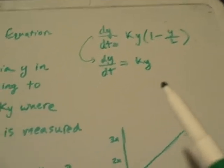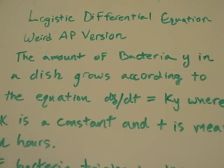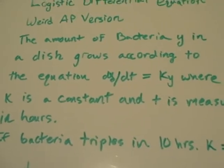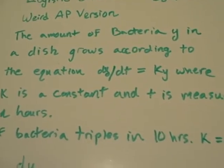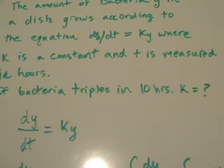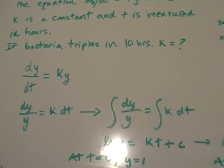So just keep that in mind if you already know stuff about logistic differential equations or if you're just getting into it. Don't get confused about that. So in this one, the amount of bacteria y in a dish grows according to the equation dy over dt equals ky where k is a constant and t is measured in hours. If bacteria triples in 10 hours, k is what?